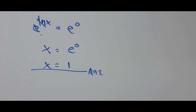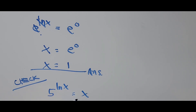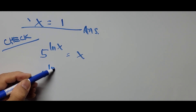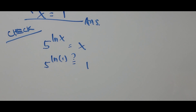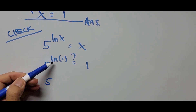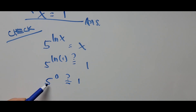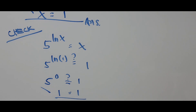Now let's check our answer by substituting X equals 1 into the original equation: 5 to the power of natural logarithm of X equals X becomes 5 raised to the power of natural logarithm of 1 equals 1. The natural logarithm of 1 is 0, so we have 5 raised to 0 equals 1, and indeed 1 equals 1, since any number raised to the 0 power is 1. This confirms our answer: X equals 1.